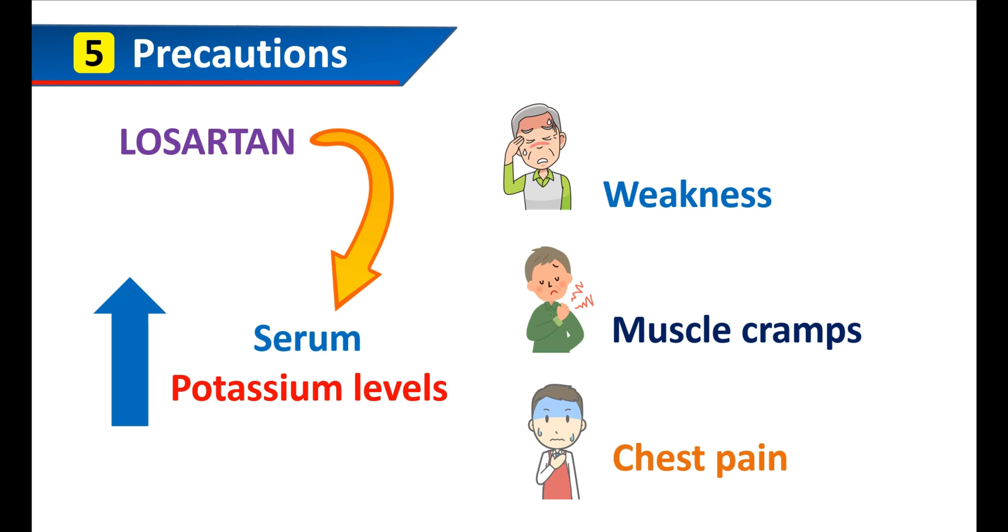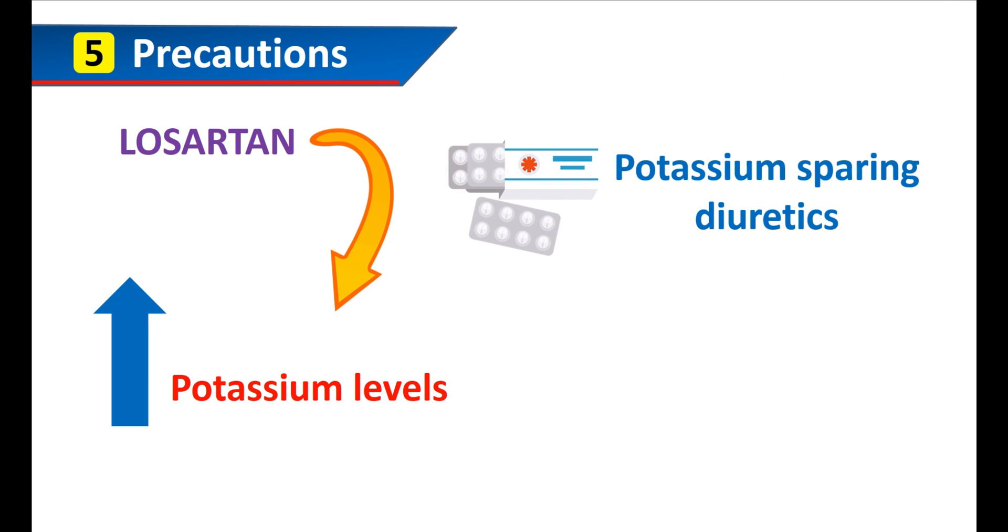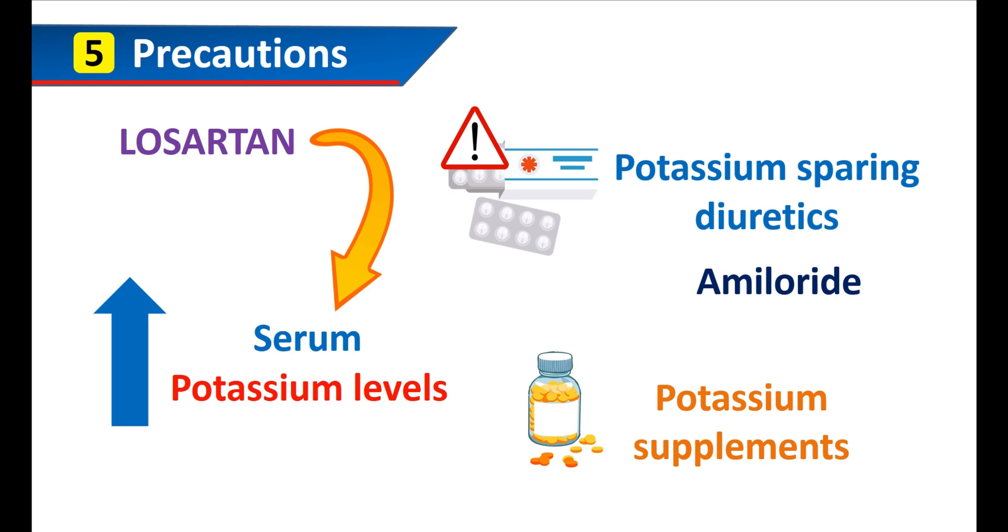However, it may be more pronounced with other conditions. For instance, potassium-sparing diuretics like amiloride can increase the potassium levels when they are combined with Losartan. So, they should be carefully used with this medication. Similarly, potassium supplements can also increase the risk when they are combined with Losartan.